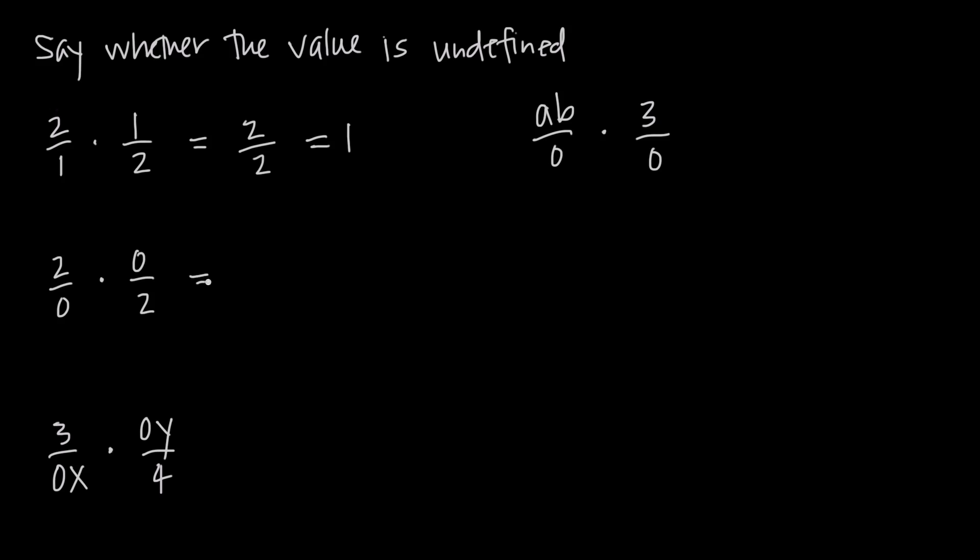But in this case, we multiply our numerators together. We have 2 times 0 is 0, and our denominator is 0 times 2, we also get 0. So comparing this to our first example where you have 2 over 2 is equal to 1, you might say 0 over 0 is equal to 1. But in fact, that's not true.